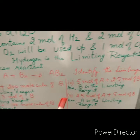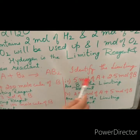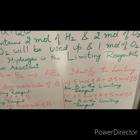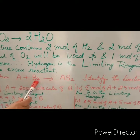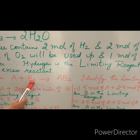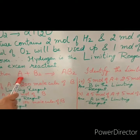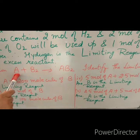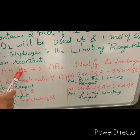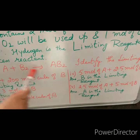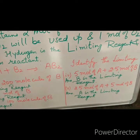Let us analyze the fourth condition: 5 mol of A and 2.5 mol of B₂. If we have 5 mol of A and 2.5 mol of B₂, then 2.5 mol of B₂ will react with 2.5 mol of A. So A is going to be the excess reagent and B₂ is going to be the limiting reagent in this reaction.